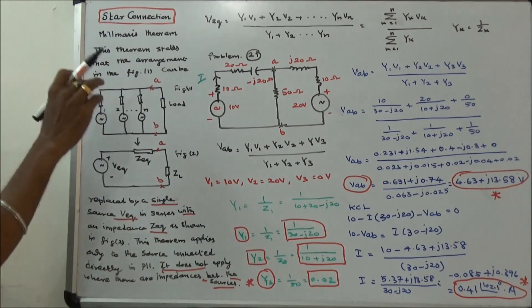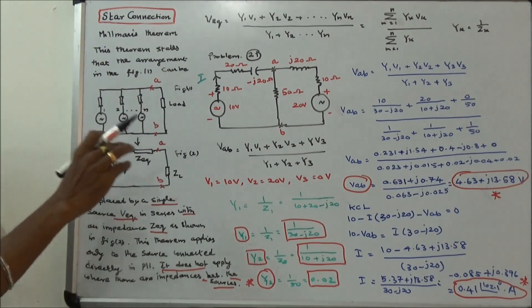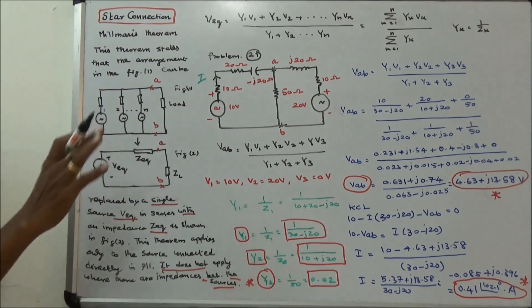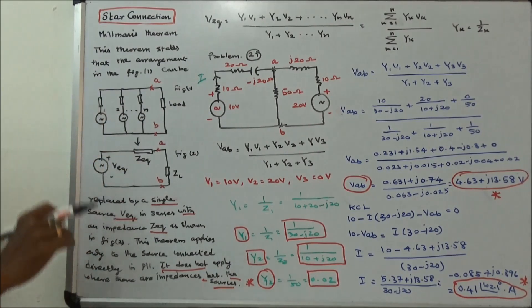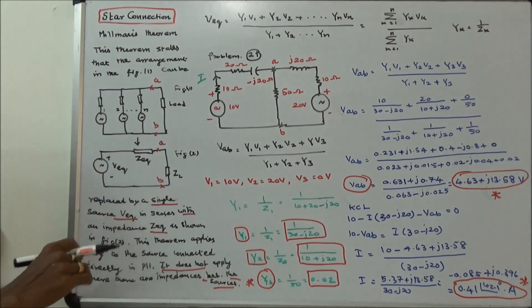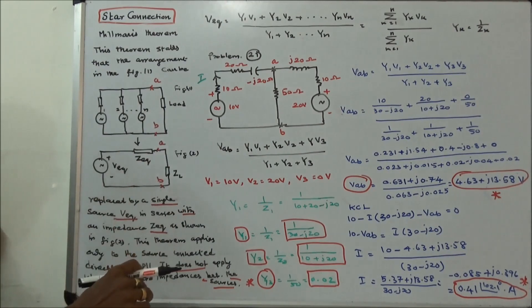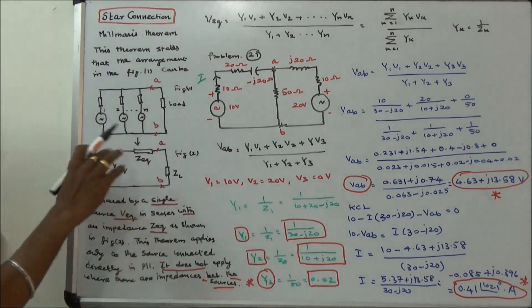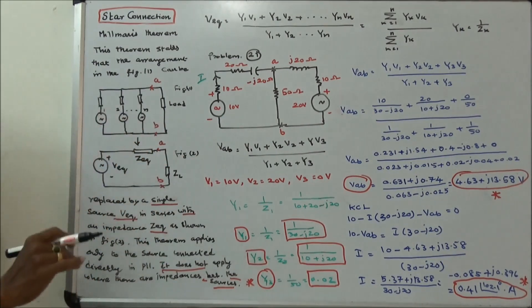This theorem applies only when the sources are connected directly in parallel. One limitation is it does not apply where there are impedances between the sources. That is the limitation.